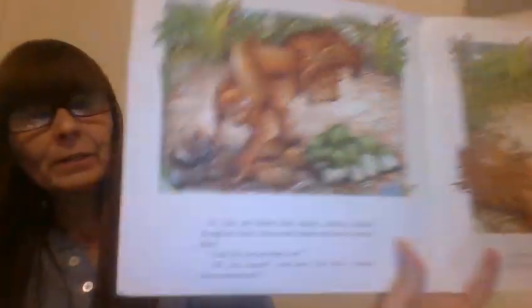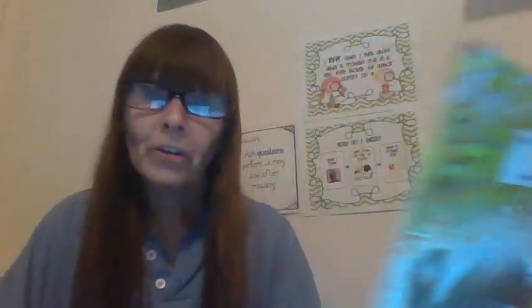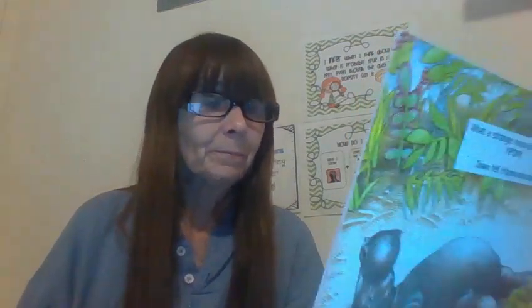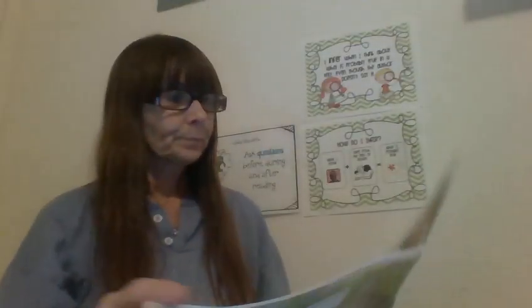So what can we infer about him taking Lion for a walk in the forest? We can predict what might happen. So Lion and Anansi went walking through the forest. After a while, Anansi led Lion to a certain place — can you infer what that place might be? Lion, do you see what I see? Oh yes, Anansi, said Lion — isn't this a strange moss-covered rock? Ka-pam — down fell Lion! Anansi ran back to Lion's house and made off with Lion's yams. An hour later, Lion woke up, his head was spinning, and when he got home he found every single one of his yams was gone. Lion was very sad.